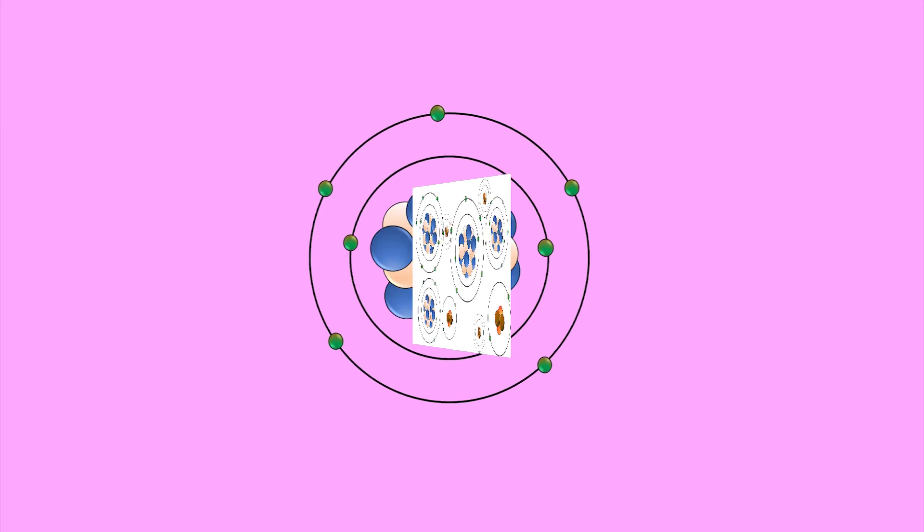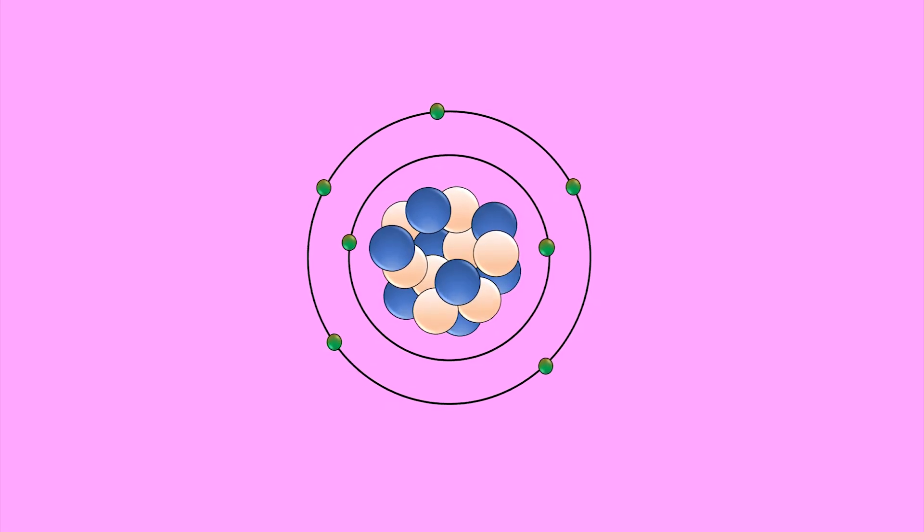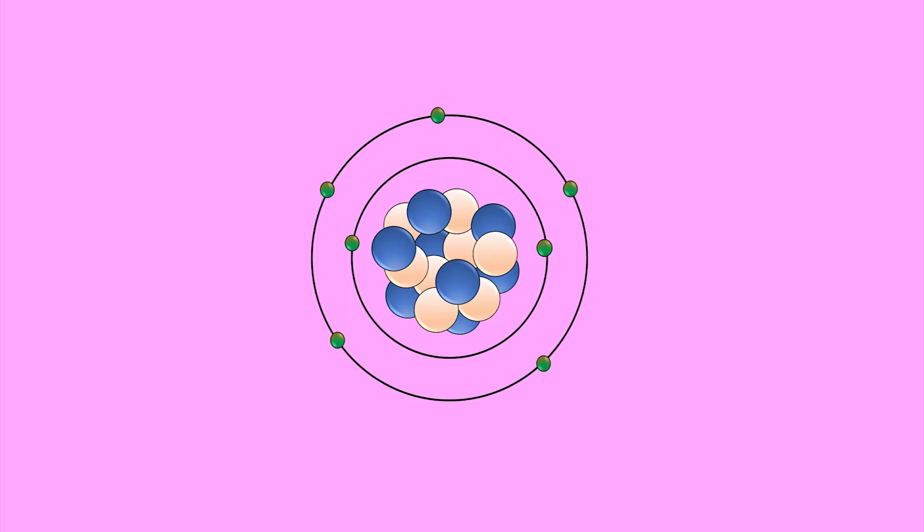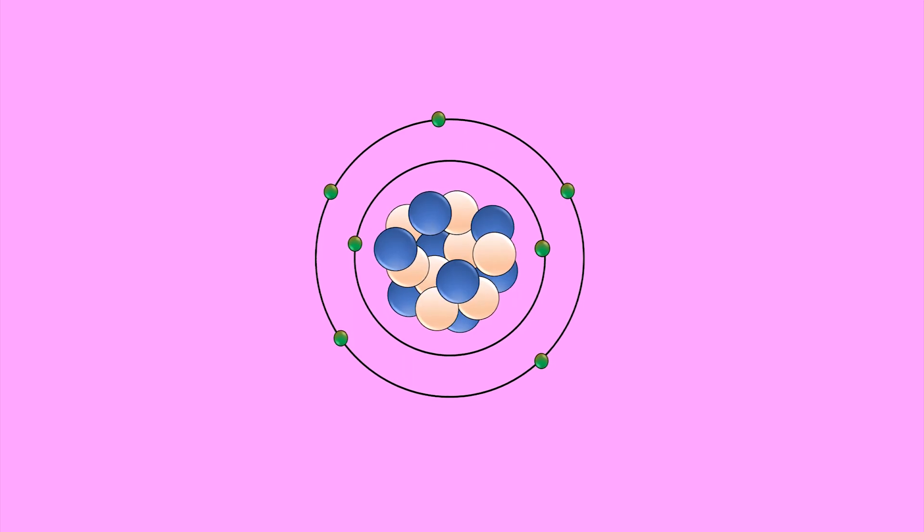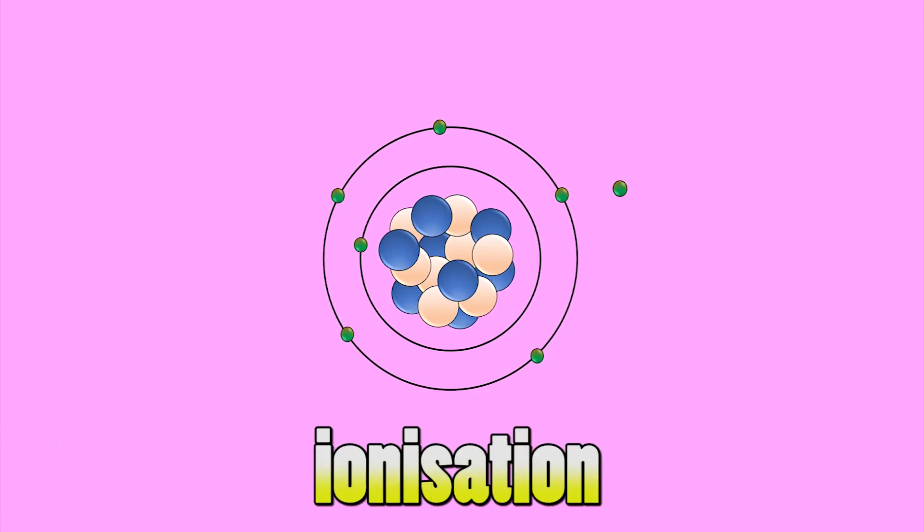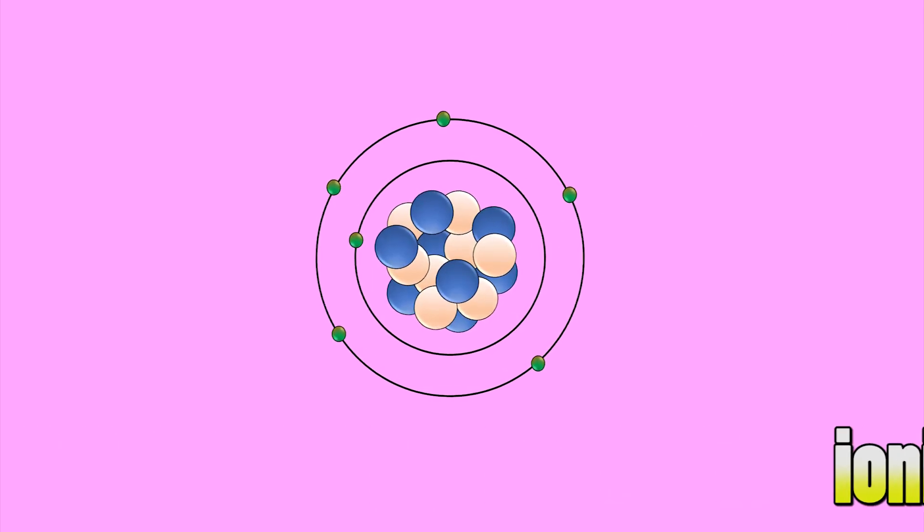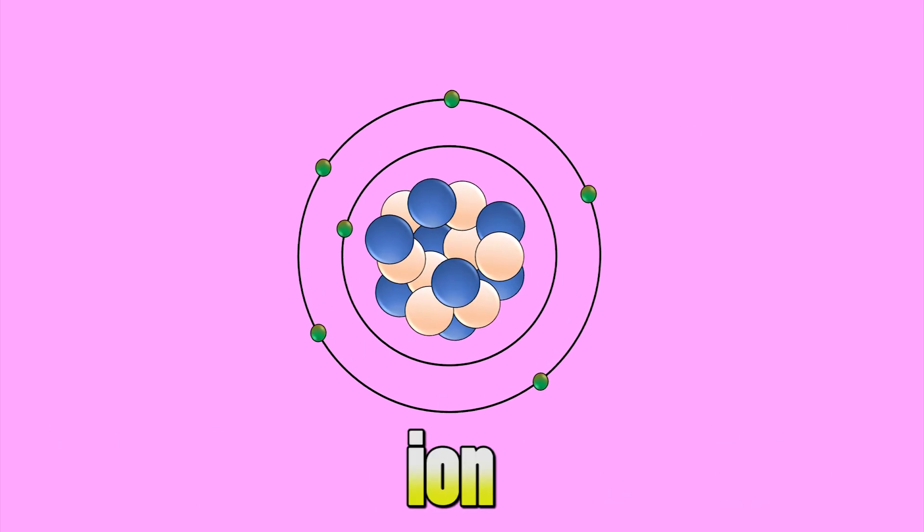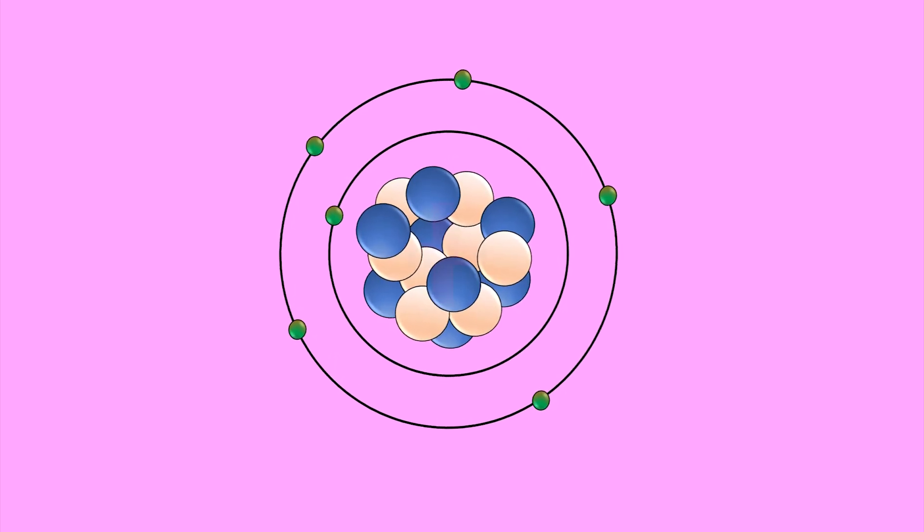If the electromagnetic radiation being absorbed has sufficient energy, i.e. high frequency radiation, then the electron can actually escape from the atom. This is called ionization. The atom has now become an ion. If it loses an electron, that means it has a positive charge.